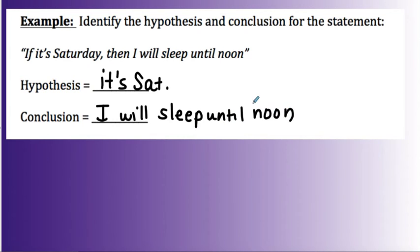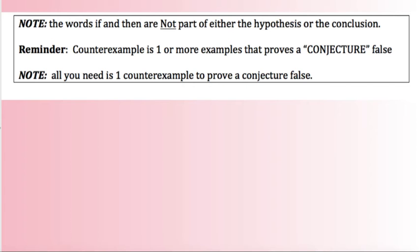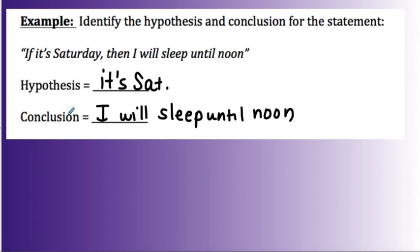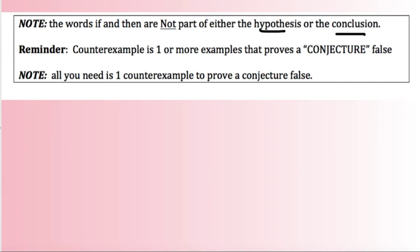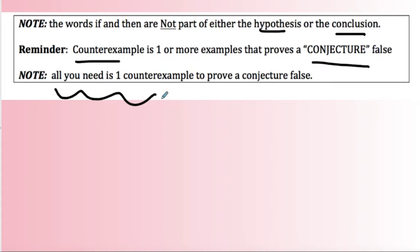Notice that the words 'if' and 'then' are not part of the hypothesis or conclusion. Now, if it is Saturday, I'm trying to prove the conclusion is false. What if I woke up at 10? Did I sleep till noon? When you provide one example that proves a conjecture false, that's called a counter-example, and it makes the statement false. All you need is one counter-example to prove a conjecture false.